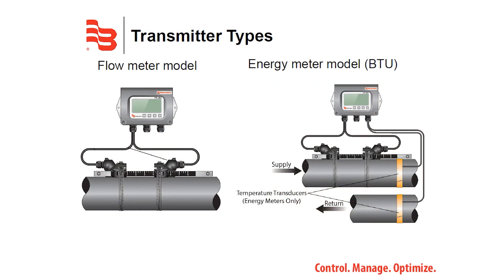There are two main transmitter types with the TFX Ultra. It can be configured as a basic flow meter transmitter to give a volumetric reading output. Alternatively, it can be configured as a BTU metering system, which includes transducers for flow and temperature for use as a hydronic heating and cooling system. The TFX Ultra carries hazardous rating certifications of Class 1 Division 2, with options for Class 1 Division 1 through the use of intrinsically safe transducers.